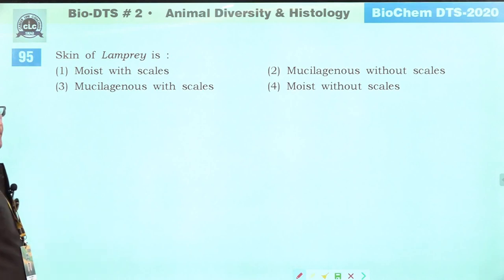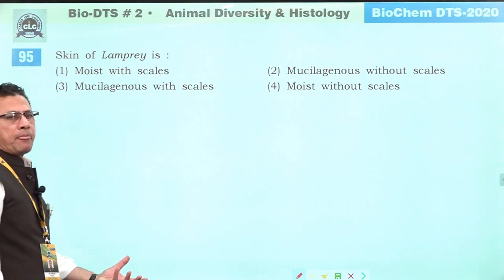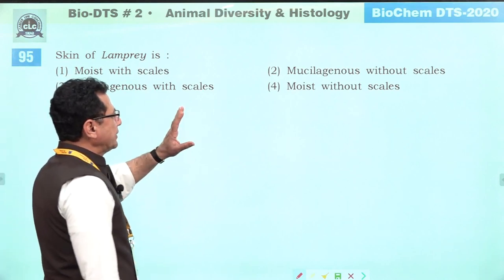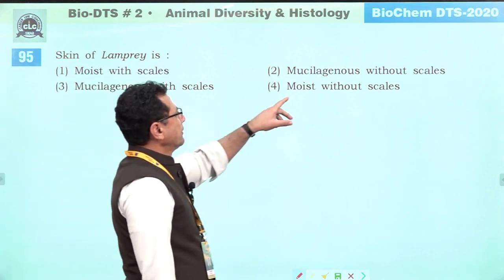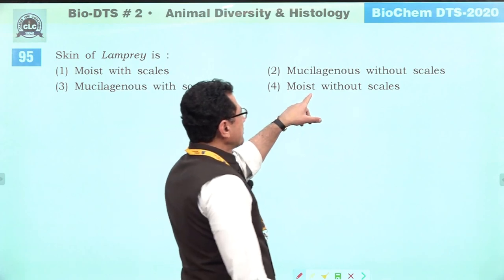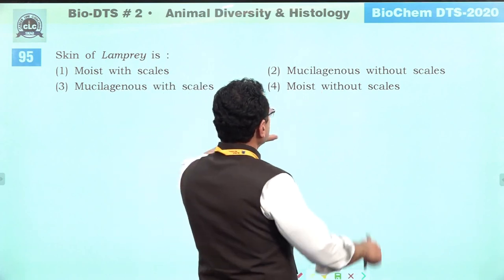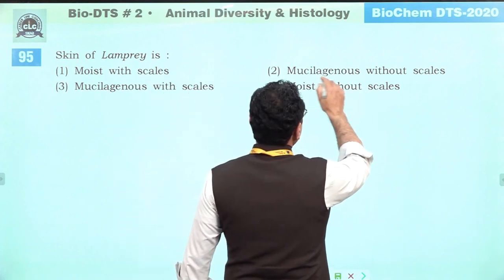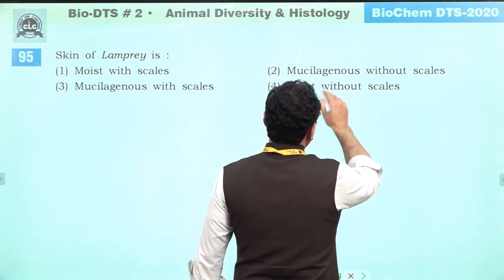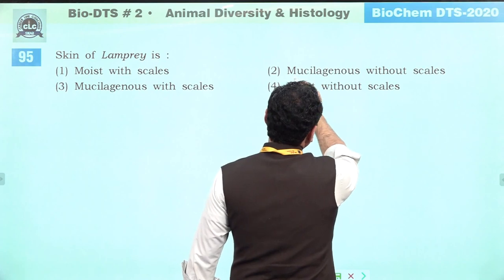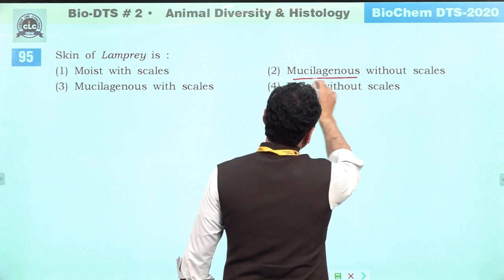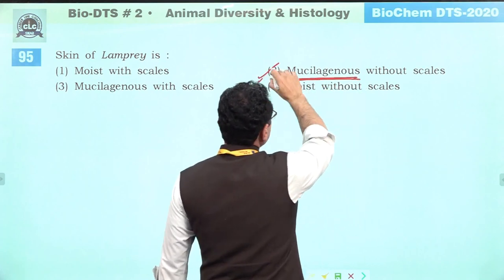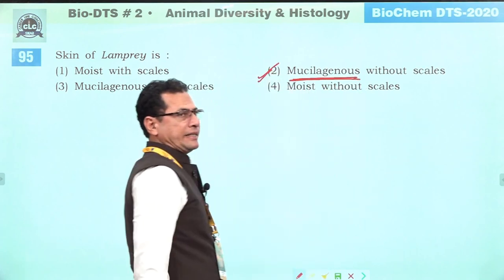Lamprey (Petromyzon) does not have scales on its skin. Its skin is moist and mucilaginous without scales. Answer is second.